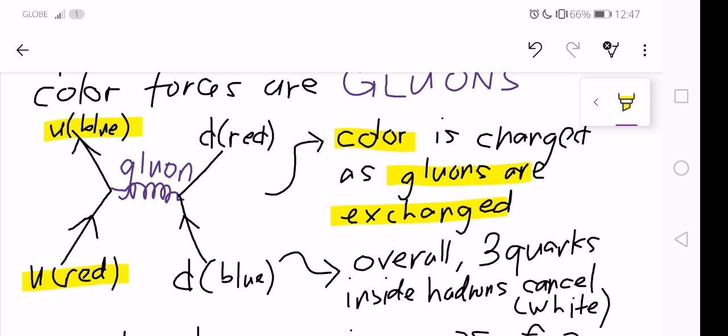The up quark, being initially red, transitions to blue. The blue charge is exchanged with the down quark, which is initially blue and then transitions to red. Overall, the three quarks inside the hadrons cancel out and become white.